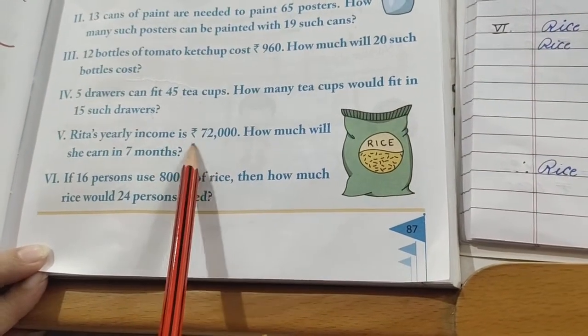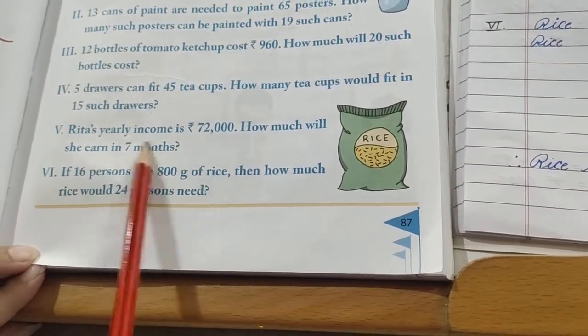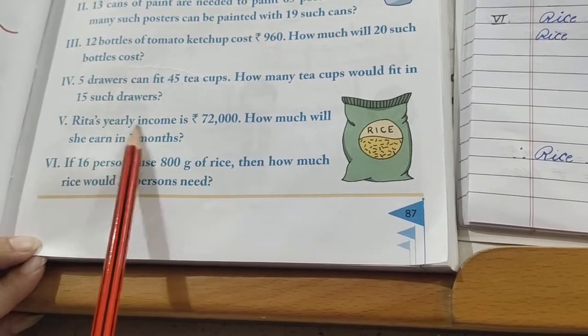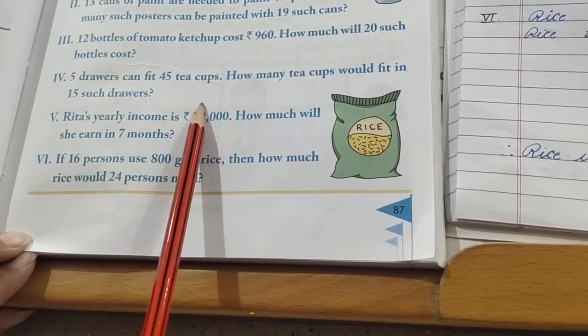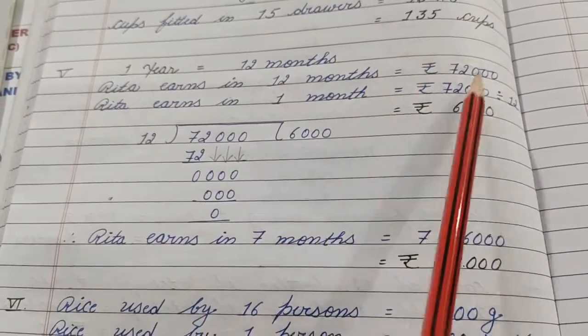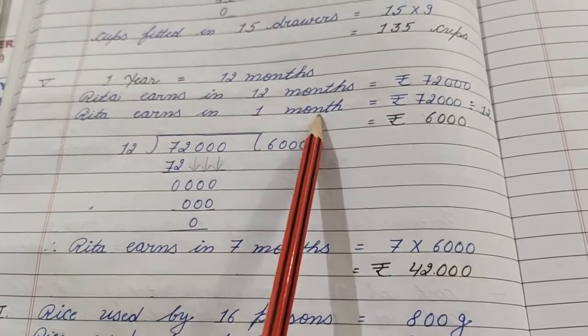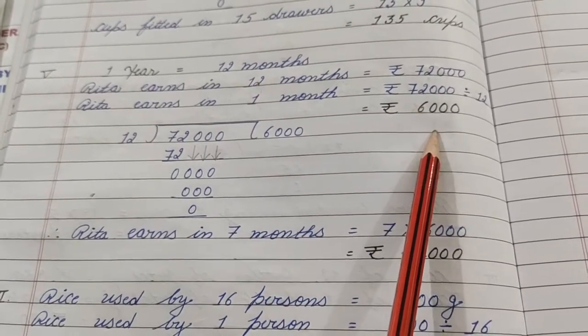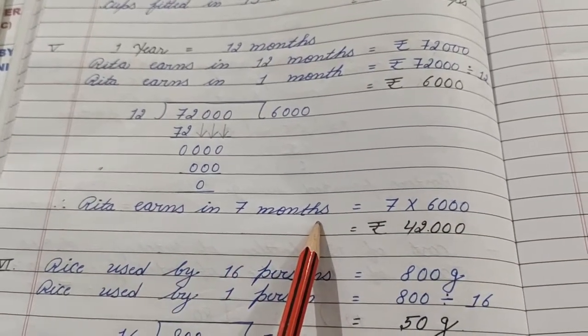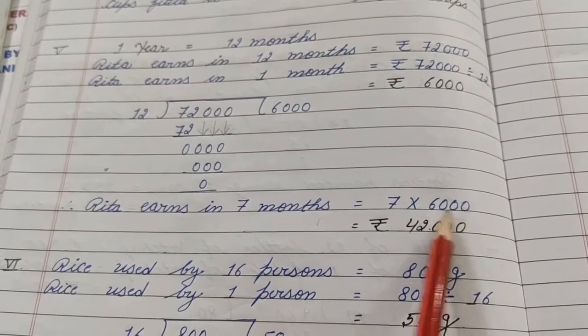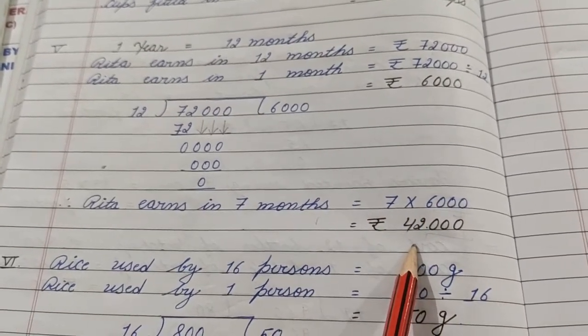Rita's yearly income is rupees 72,000. How much will she earn in 7 months? Children, one year has how many months? 12. From 12 we'll go to 1 month, and from 1 we'll go to 7. See, one year equals 12 months. Rita earns in 12 months equals rupees 72,000. Rita earns in 1 month, 72,000 divided by 12, that is 6,000. Now we got 1 month income. So we can find 7 months income. Rita earns in 7 months equals 7 multiply 6,000. Use linear multiplication, count all the zeros and write them here, then 7 times 6 is 42, this is your answer.